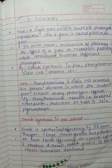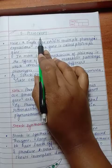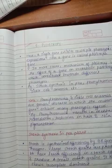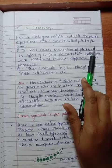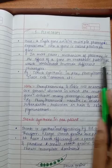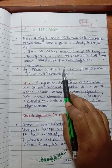Now we come to pleiotropy. Here, a single gene exhibits multiple phenotypic expressions. Such a gene is called pleiotropic gene. In most cases, the mechanism of pleiotropy is the effect of a gene on metabolic pathways which contribute towards difference of phenotypes. Examples: starch synthesis in pea plants, phenylketonuria, sickle cell anemia.